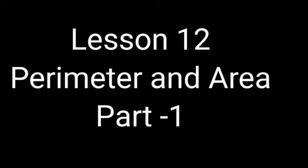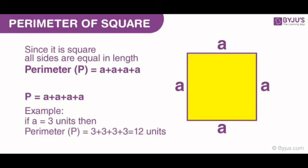Today's topic is perimeter and area. In this topic, first let us learn how to find the perimeter of the given figure. Let us see the perimeter of a square. The perimeter of the square is the sum of the length of all four sides of the square.